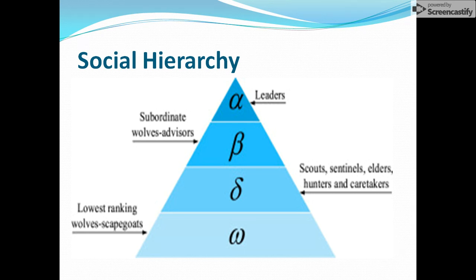When implementing this in our programming, we take care of this leadership hierarchy. We must have alpha, beta, and delta — representing the fittest solutions — and we give chances to omegas to update their positions so they can improve and move up the hierarchy.